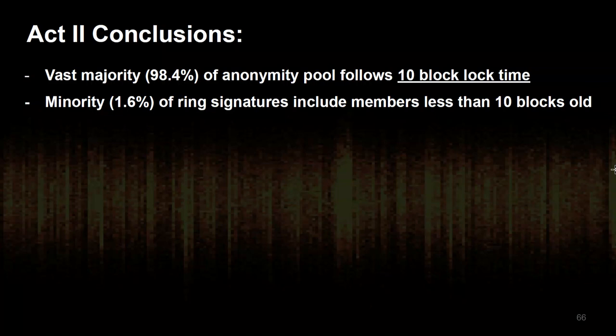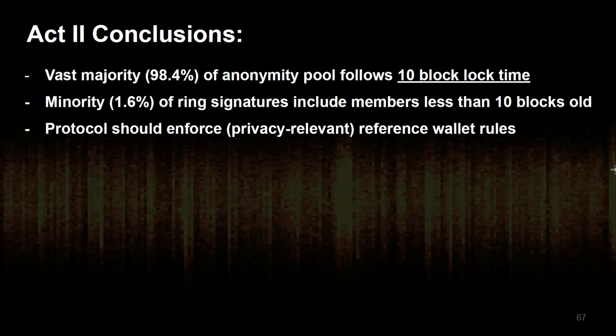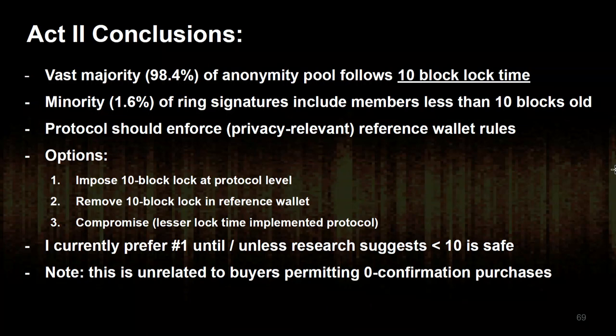Conclusions from this observation: the vast majority of transactions follow the 10-block lock time in the reference wallet. A minority of ring signatures include members less than 10 blocks old, which really sticks out. My philosophy is that protocols should enforce privacy-relevant reference issues — if it's important enough to code into our wallet, we should code it into our protocol. There are three options: add the 10-block lock at the protocol level by rejecting younger transactions; remove the 10-block lock in the reference wallet to make them match; or compromise on say five blocks, but enforce it in the protocol. My inclination is option one, since there's no research showing lowering the confirmation time is safe.